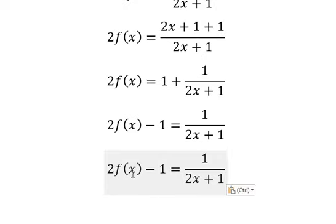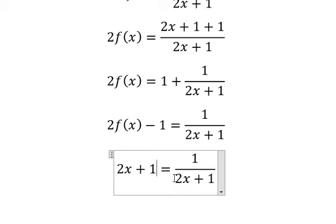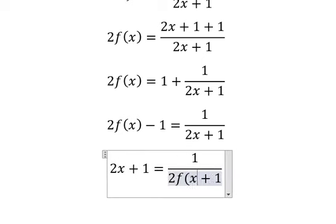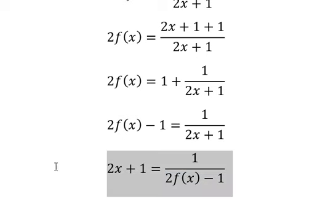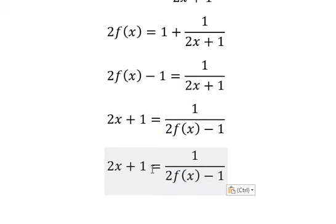Next, 2f(x) minus 1, and 2x plus 1 goes to the left. Then I will put 1 on the right side.